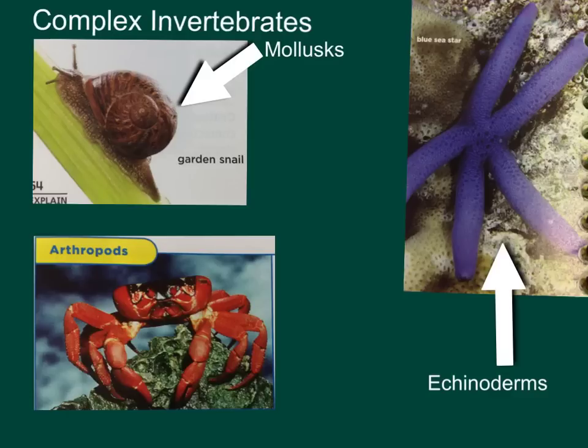Let's talk about echinoderms — that's your sea stars. Notice I said sea star, not starfish. Fish are vertebrates and have backbones; this guy doesn't. They also have your sea urchins and your sea cucumbers. They have a hardened skeleton inside the body, called your endoskeleton, and they are spiny — they have spiny skins that poke throughout and are really bumpy. These guys usually have radial symmetry, as you can see in the picture of the sea star: you have a central point and you can cut it in multiple ways.